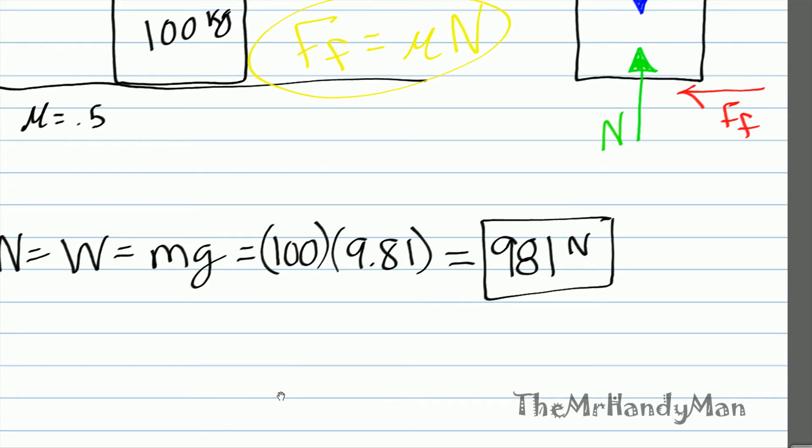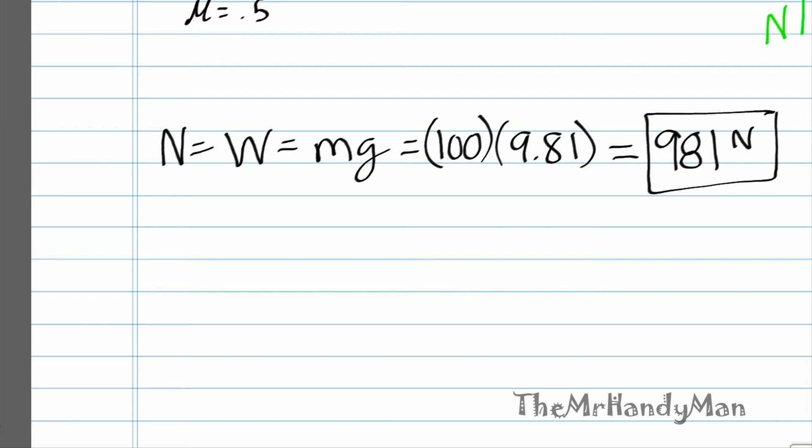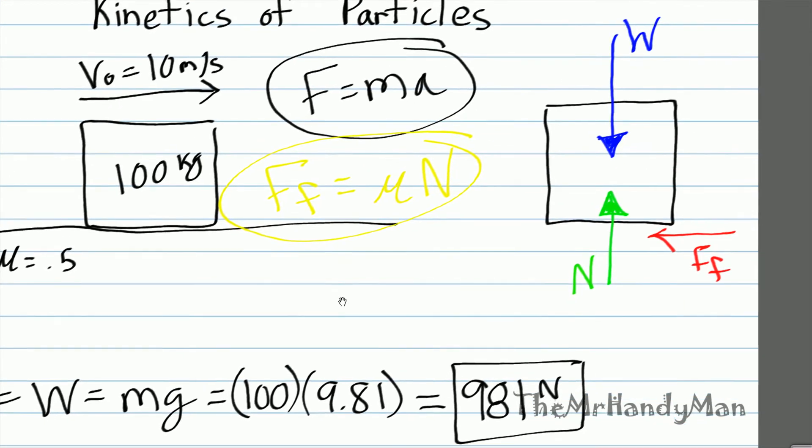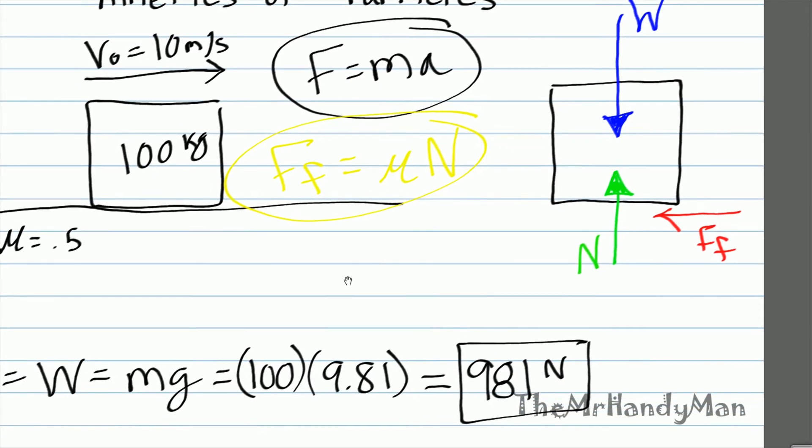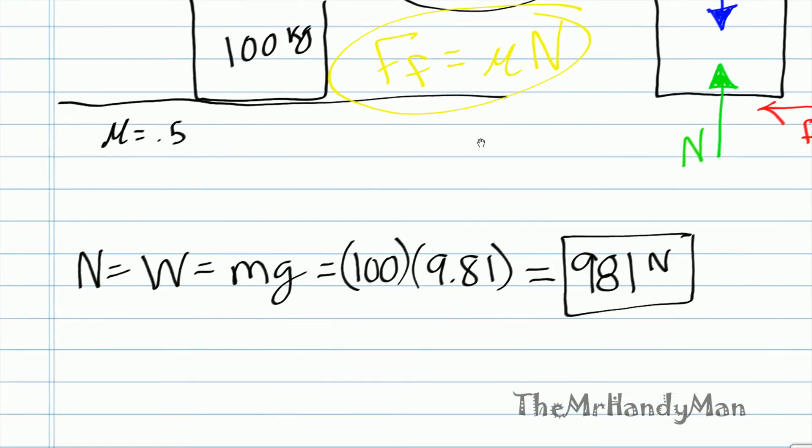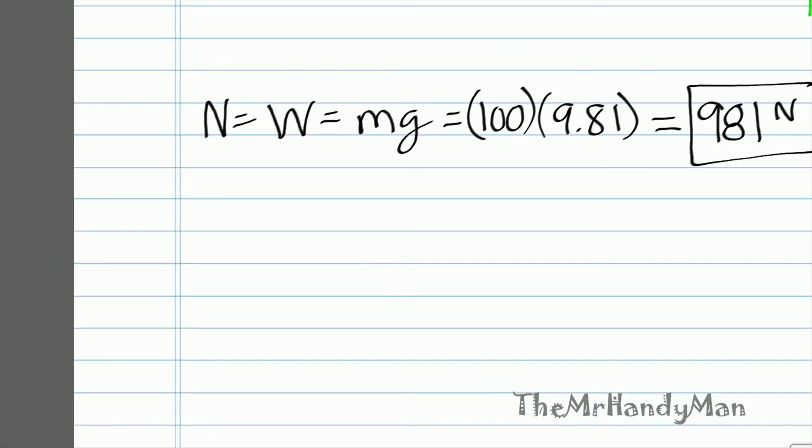So now that we have the normal force is equal to 981 newtons, now we need to solve for the friction factor. Friction factor, looking back at our yellow equation up here, friction force equals friction factor times the normal force. So, following that template,